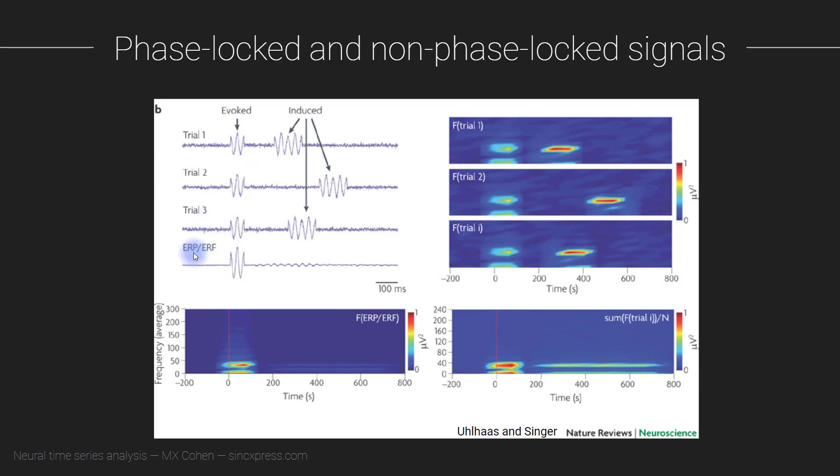When you compute the time domain average the ERP here this is ERF. This would be for a magnetic field that's the MEG equivalent of an ERP. You can still see this first evoked or phase locked response but this is averaged out for the same reason that I explained in the previous video.